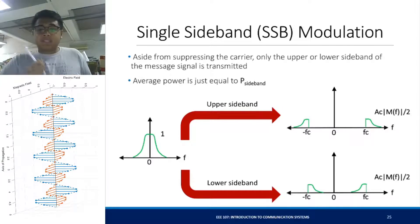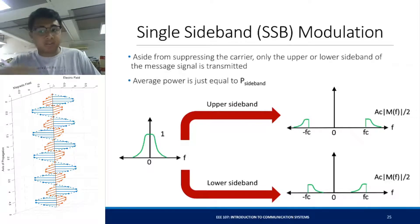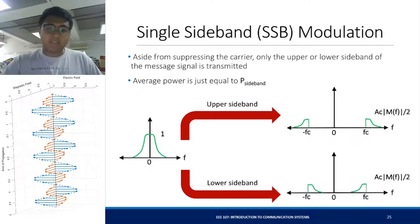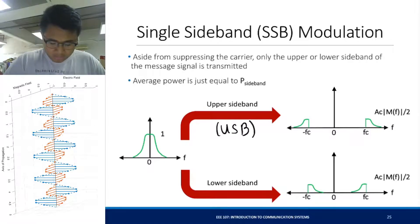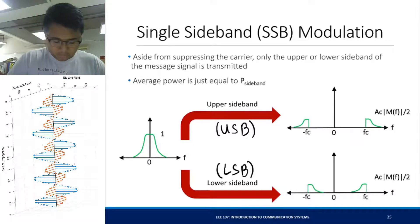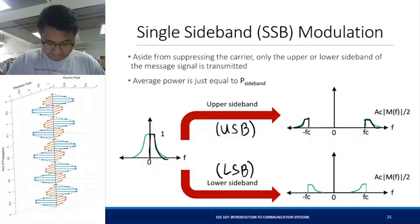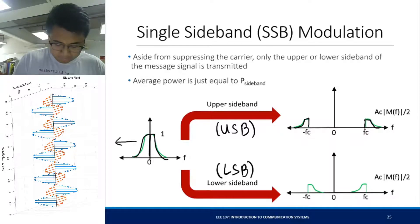If DSBSC saves power by suppressing the carrier, a Single Sideband modulation, or SSB, will save bandwidth and power by suppressing one band of your frequency spectrum. If we suppress both the carrier and one sideband, we still have the same information we're trying to transmit, but we have saved some bandwidth. There are two types of SSB: the upper sideband (USB) and the lower sideband (LSB). If we extract only the upper sideband, we get the upper sideband, and since it's a real signal, it should have even symmetry in its magnitude spectrum.